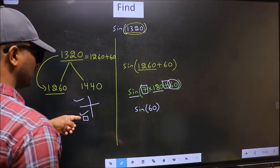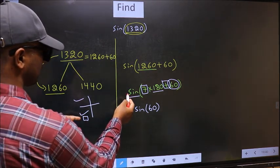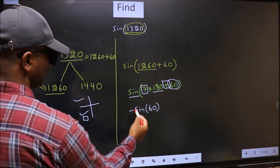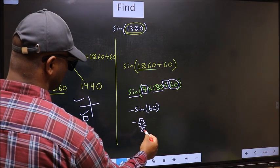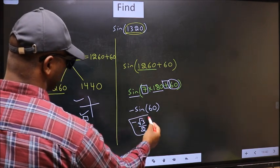And in the third quadrant, sine is negative. So we should put negative. So negative sine 60 is negative root 3 by 2. This is our answer.